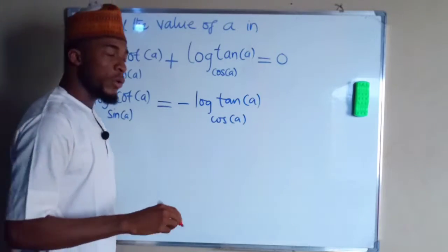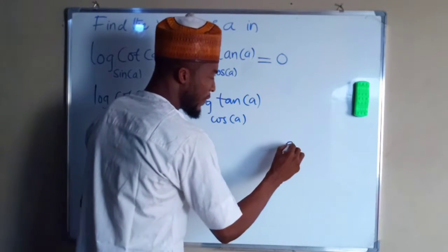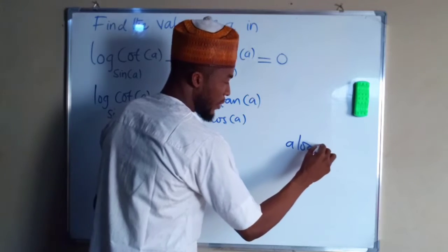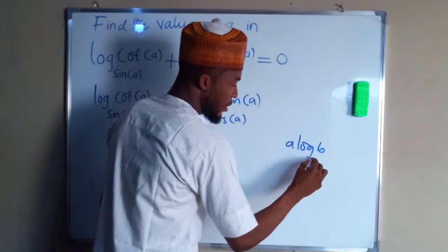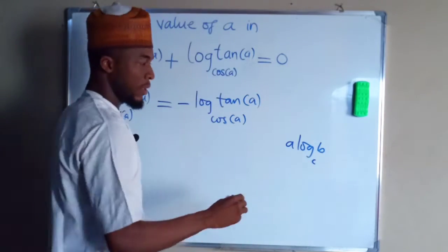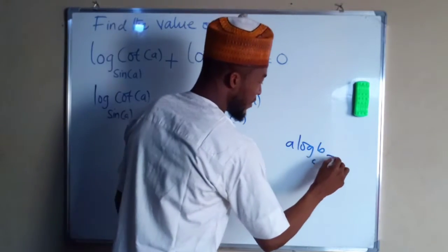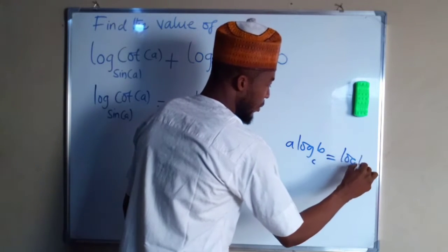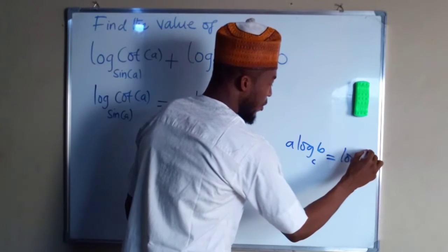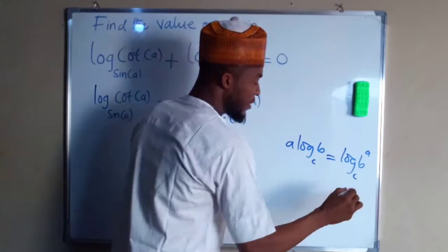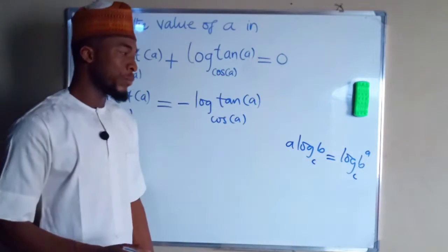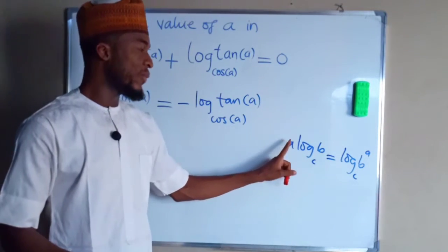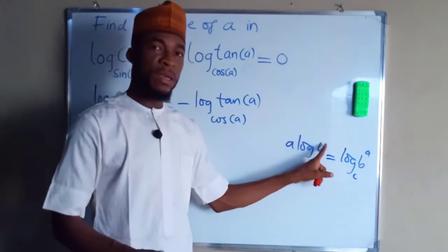In logarithm, if you have A multiplied by log of B with the base C, this is the same thing as log B to the power of A with base C. This means that A can be transformed as an index of B.